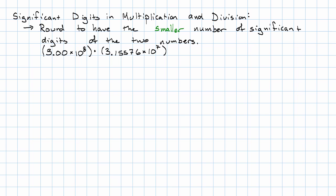Let's say we're multiplying these two numbers together: 3.00×10⁸. Why are those zeros there? Because this number has three significant digits. Times 3.15576×10⁷.